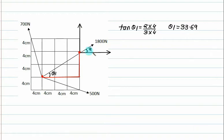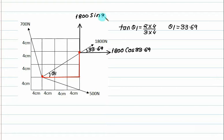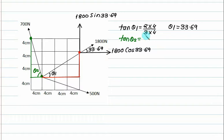With theta1 at 33.69 degrees, we get one component as 1800 cos 33.69 and another as 1800 sin 33.69. For the second force, the corner of this point gives us a triangle where the vertical dimension is 3 times 4 and horizontal dimension is 1 times 4, so tan theta2 gives theta2 equals 71.56 degrees.